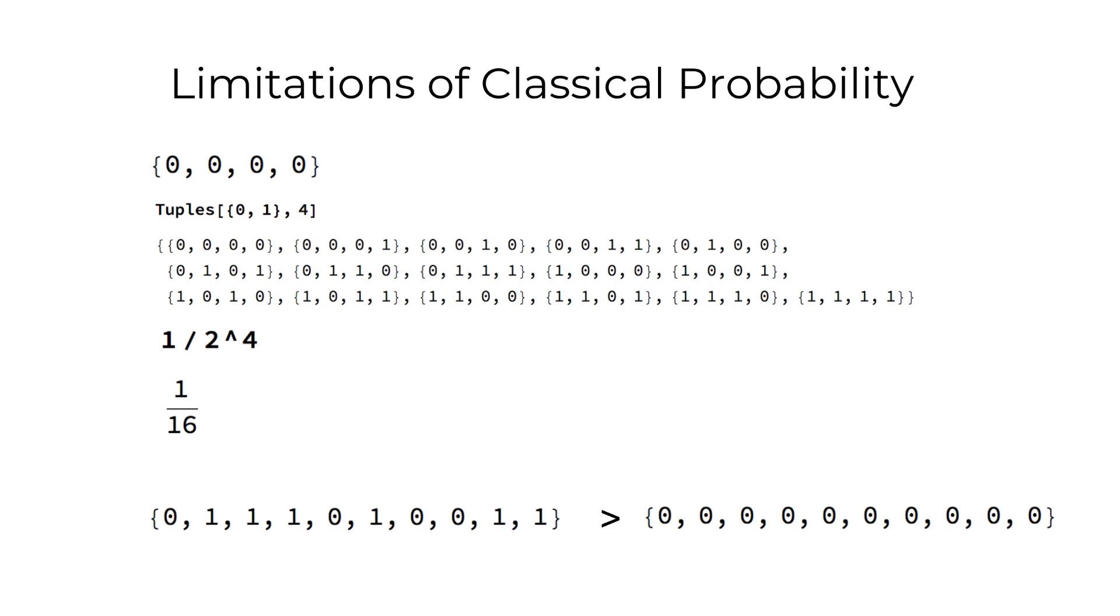It can also be said that the latter sequence, the more random looking one, seems to contain more information as if it were encoding something meaningful, but it may also just happen to be random and we will see how algorithmic complexity can help us decide.